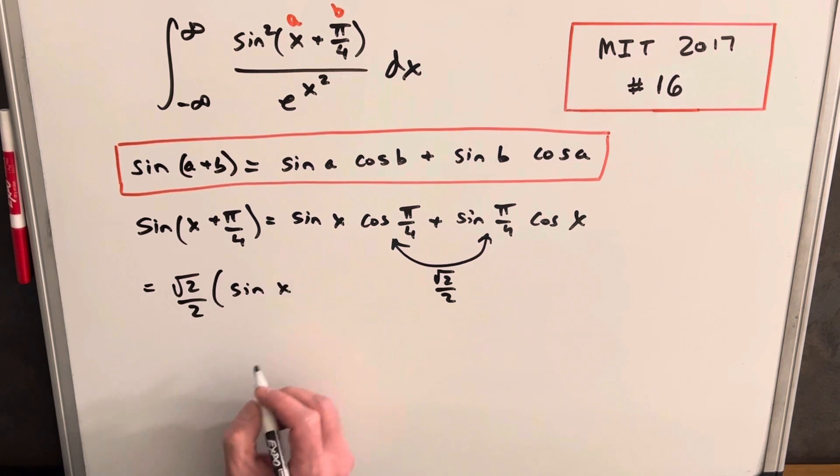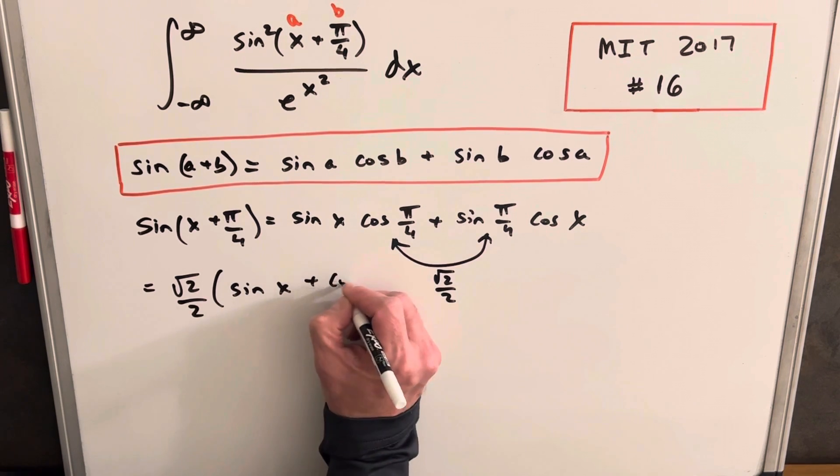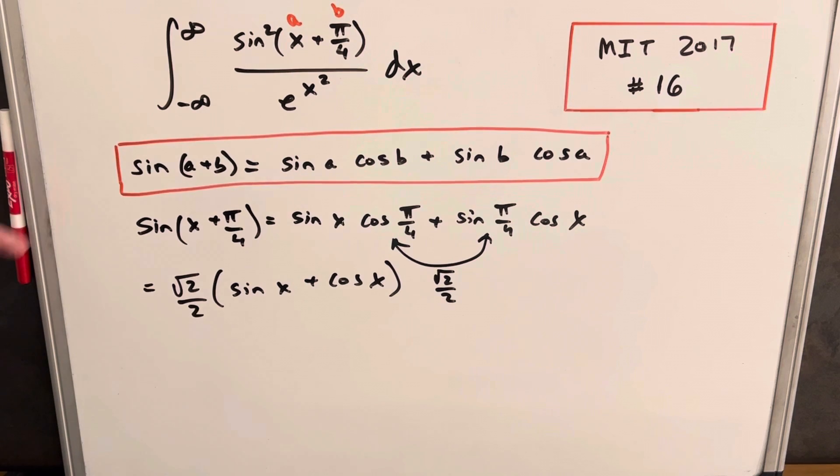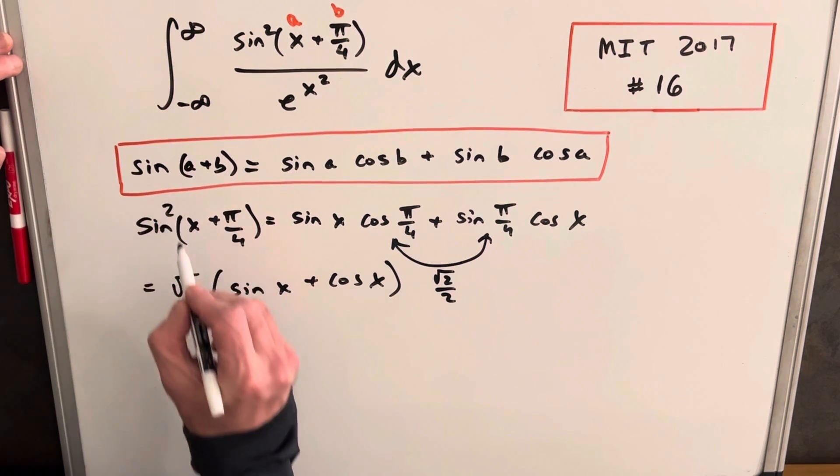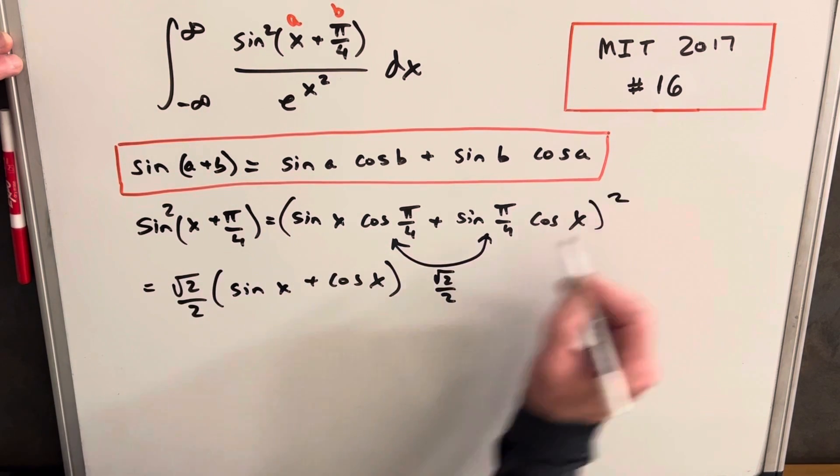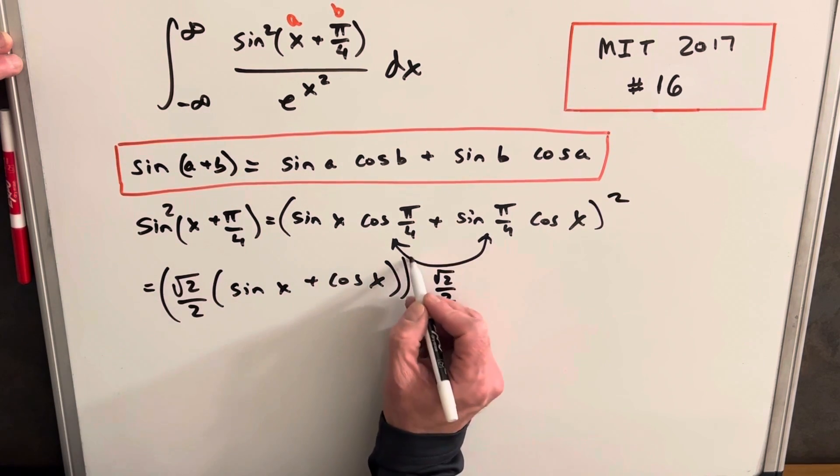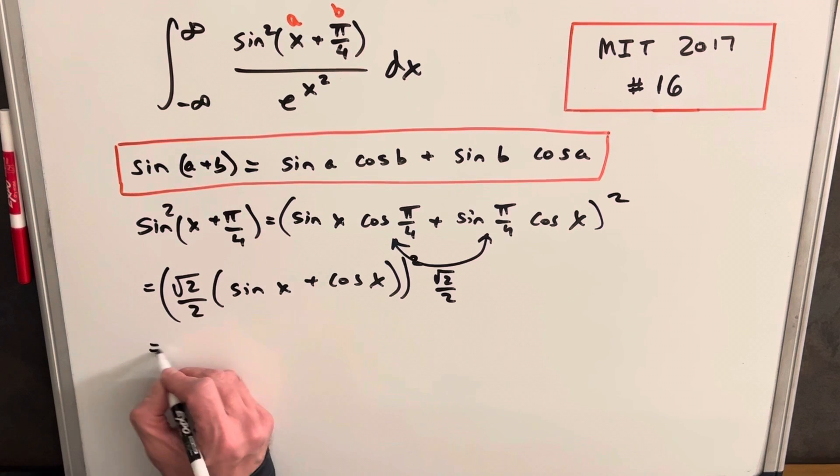then we can write this as sine x plus cos x. But like I mentioned before, we don't want to forget about our square. So let's kind of pencil it in now. If that's squared, this is squared, then this is squared. So let's just square this out.